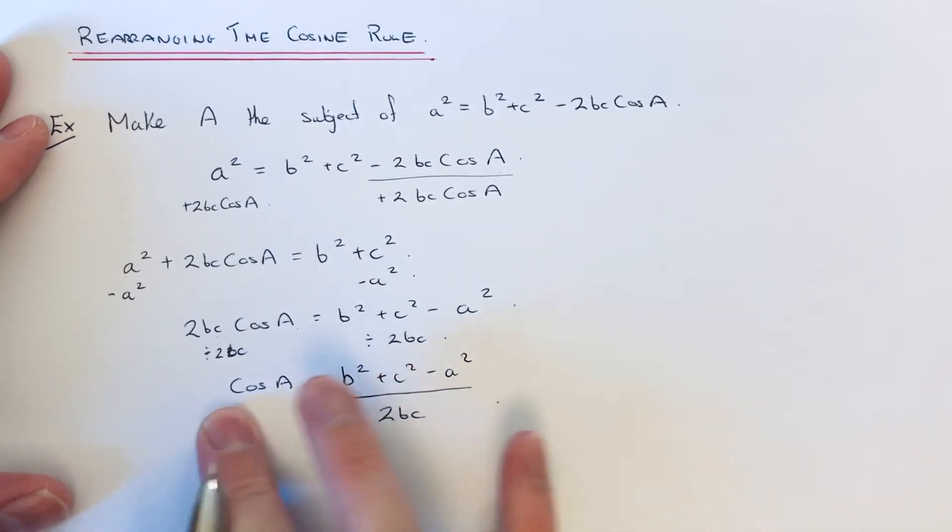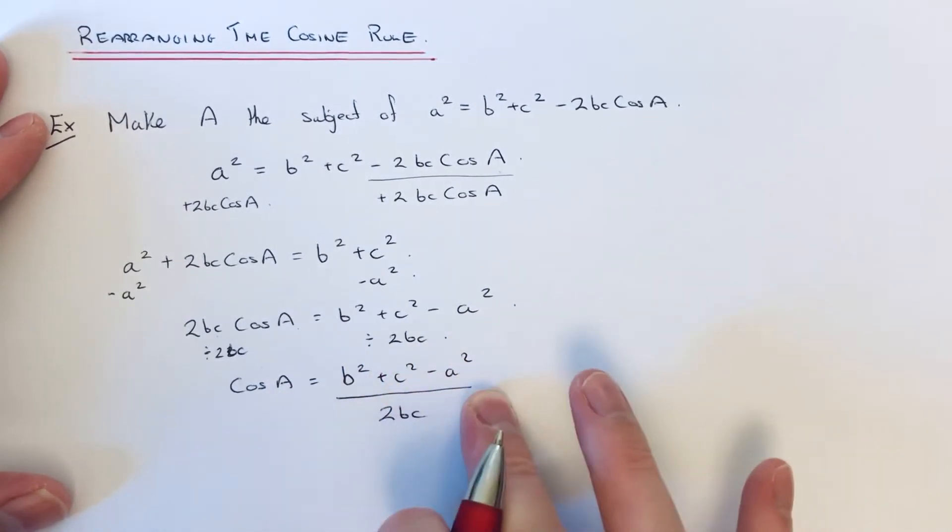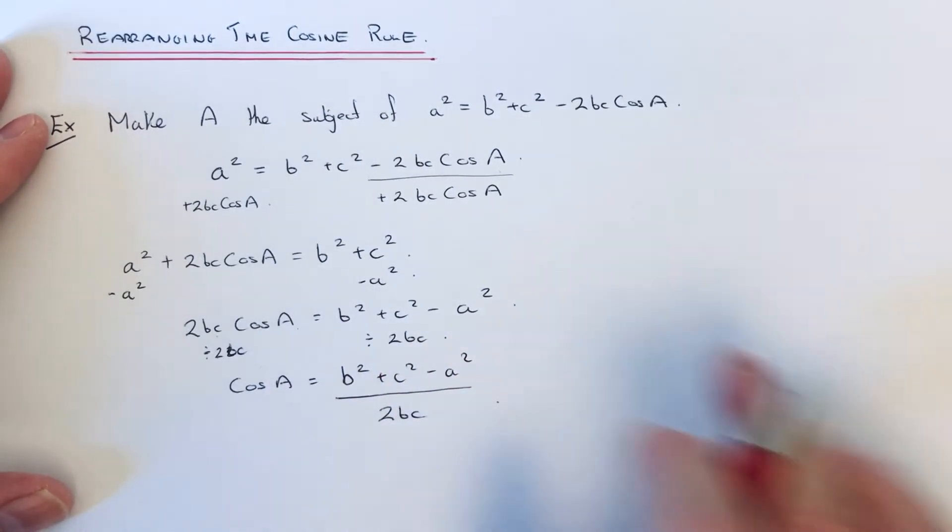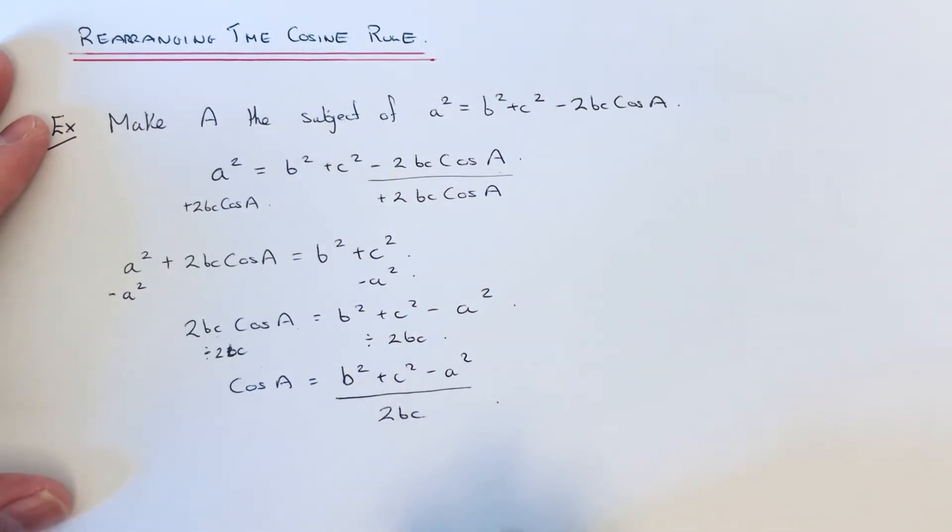Some people leave the formula like this when they're working out the angle inside the triangle. But we need to make A the subject. So we need to do one more inverse to get rid of the cos, which is cos inverse.